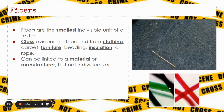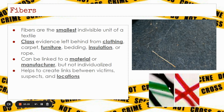We can often link a fiber to a material or a manufacturer, but we can't necessarily individualize it to a particular item of clothing. For example, we can say we know it's from a white Fruit of the Loom t-shirt manufactured in Alabama, but we can't say whether or not it's from one specific shirt found at the crime scene. Fibers help create links between victims, suspects, and locations — if we find the same fiber on a suspect, on a victim, and in the back of a car, that would be circumstantial evidence that something was in all three of those places.